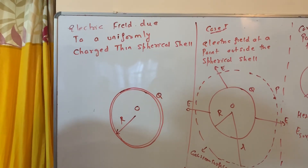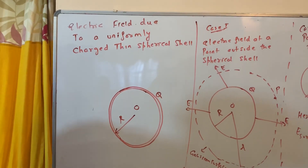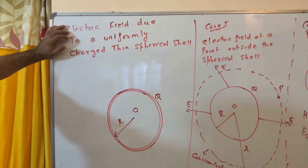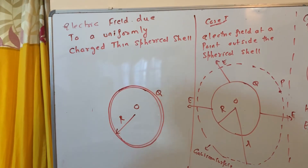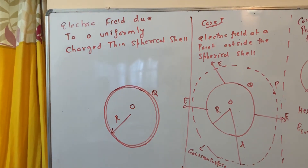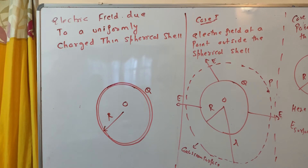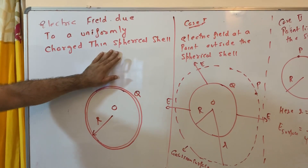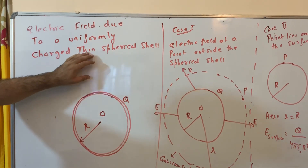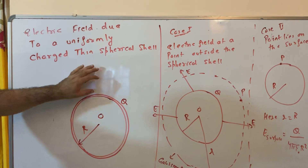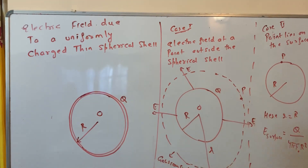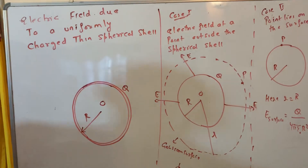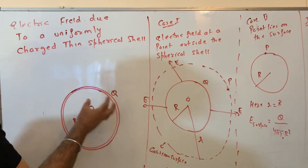Good morning. This is another very important derivation — electric field due to a uniformly charged thin spherical shell, also referred to as a shell or hollow sphere. Remember, for a shell or hollow sphere, this is a case of sigma where surface charge density applies — charge is distributed over the surface.